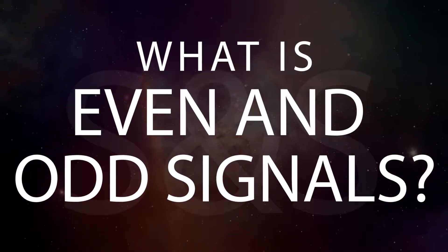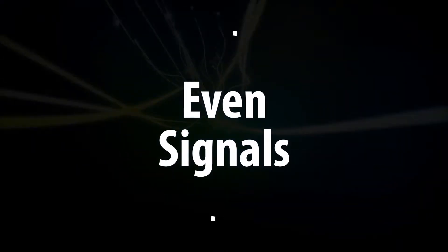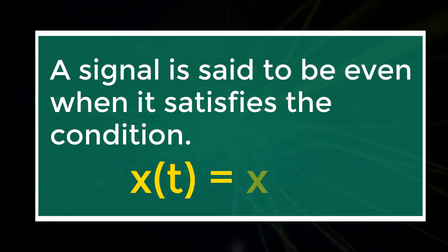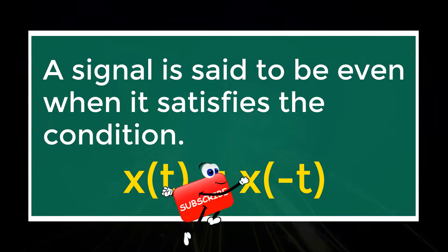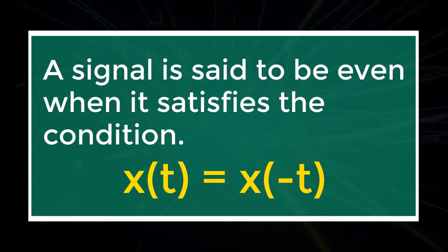What is even and odd signals? Even signals. A signal is said to be even when it satisfies the condition x(t) = x(-t).